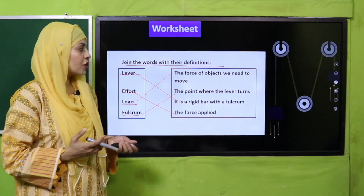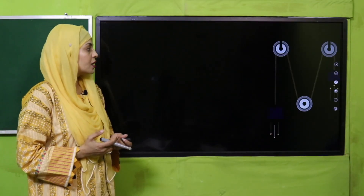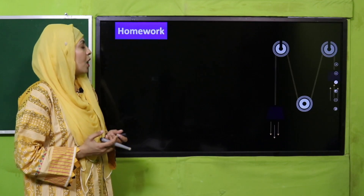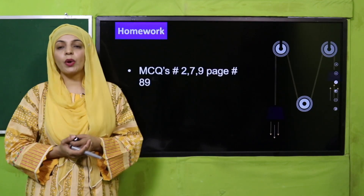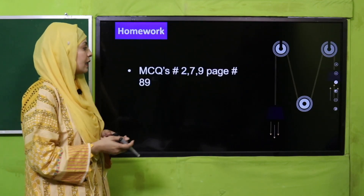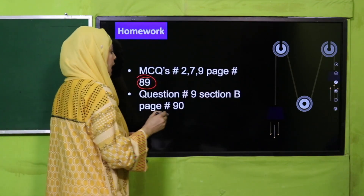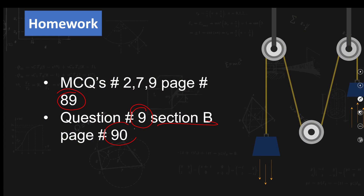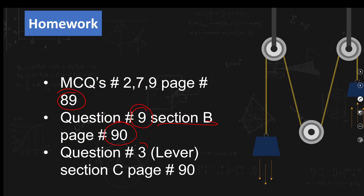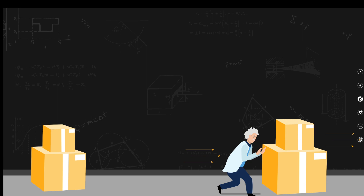I hope everybody has finished. Now let's move to the homework. You will do MCQ numbers 2, 7, and 9 on page number 89. You will also do Question Number 9, Section B, page number 90 in your notebook, and Question Number 3 on page number 90. Write the question answers in your notebook.